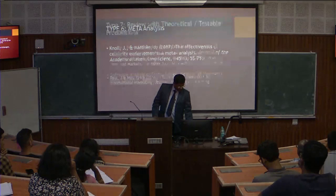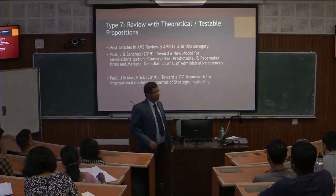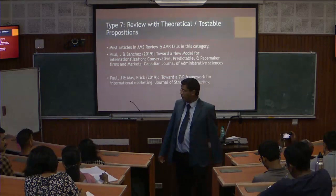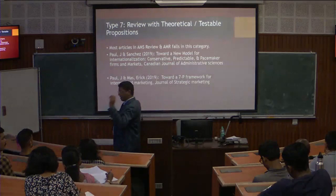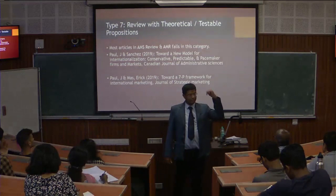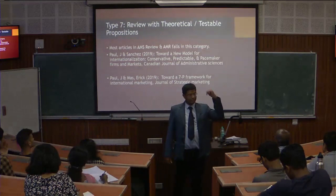The seventh type of review article is review with theoretical testable propositions. Most articles in AMS Review and Academy of Management Review fall into this category. Instead of hypotheses — which empirical articles are always based on — this type of review article is based on propositions. Those propositions should ideally be theoretical and testable, meaning future researchers should be in a position to use your propositions as testable hypotheses in their studies.